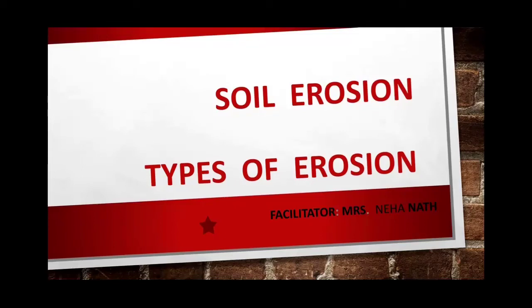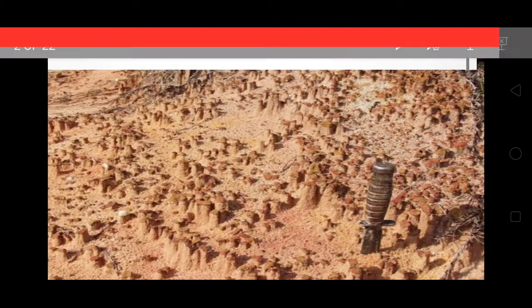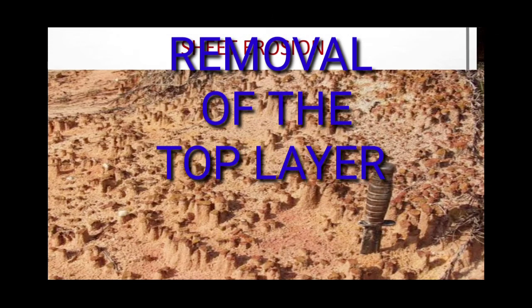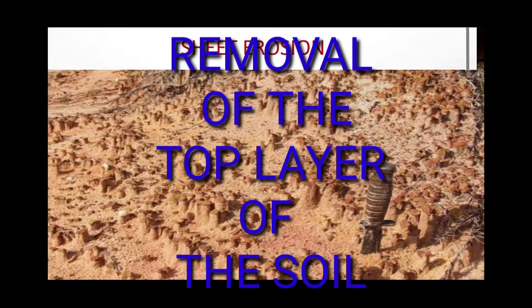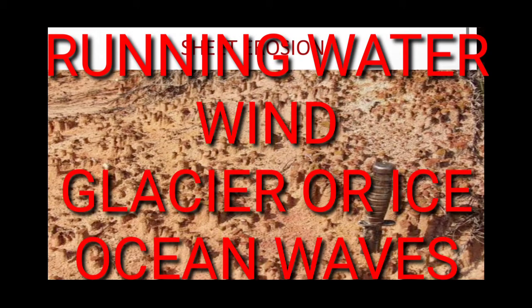Good morning children. In this module we are going to learn about soil erosion and types of soil erosion. Soil erosion is the removal of the top layer of the soil, removed by different agents of erosion like fast moving wind, running water, glacier or ice, and ocean waves.